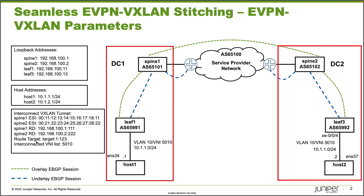We're going to use the interconnect route target value of target:1:123. The interconnect VNI list is going to be 5010, since that is the VNI the hosts are part of — we want to put that in the list. We'll talk about that when we get to it. Let's go ahead and jump to the CLI and get this going.